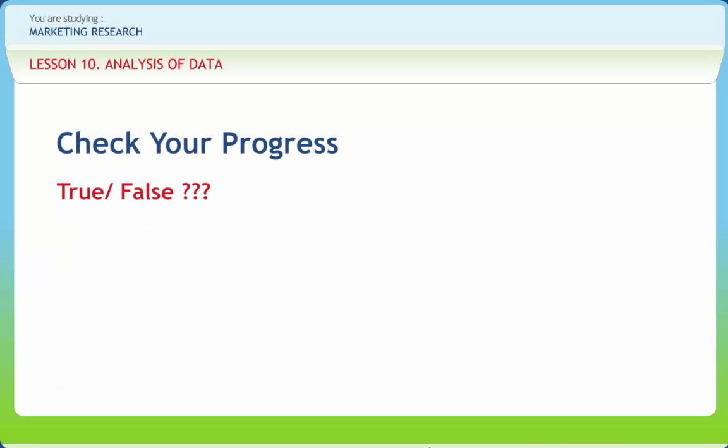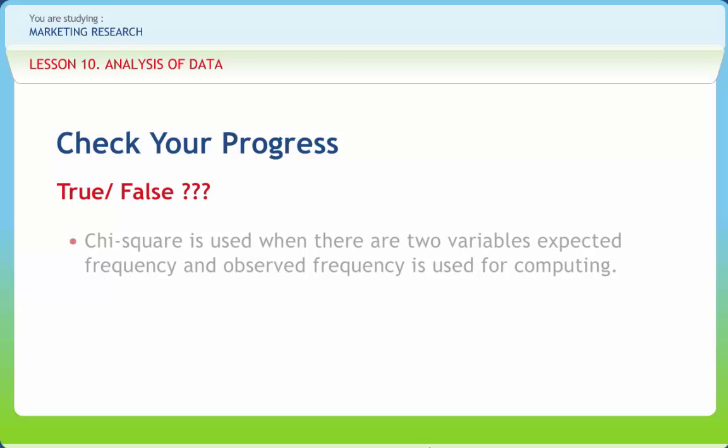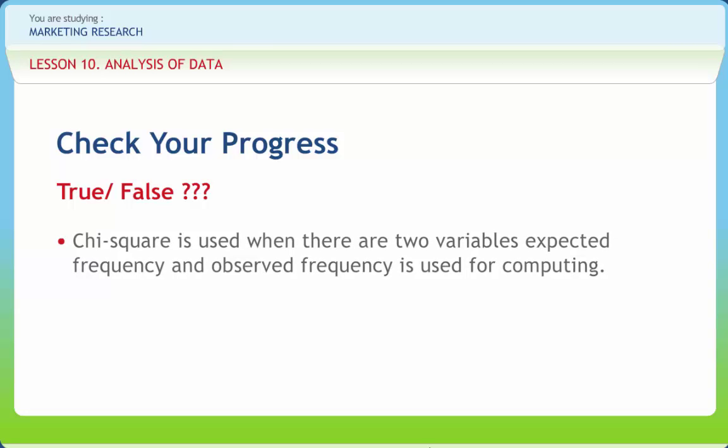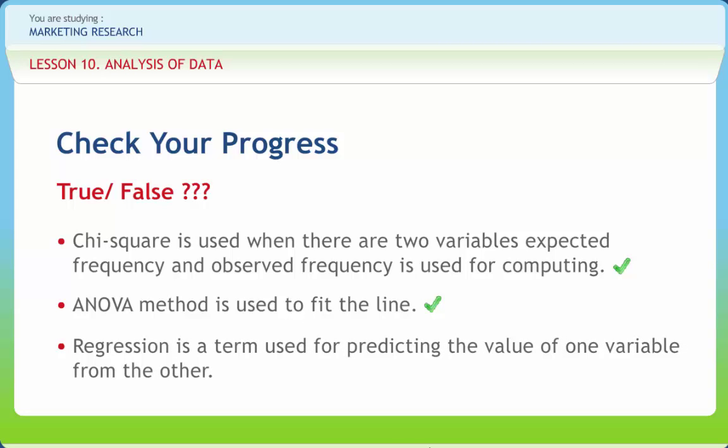Now let's see how much you have learned. State whether the following statements are true or false. Chi-square is used when there are two variables, expected frequency and observed frequency, is used for computing. True. ANOVA method is used to fit the line. True. Regression is a term used for predicting the value of one variable from the other. False.